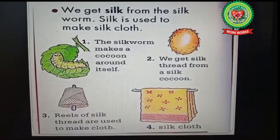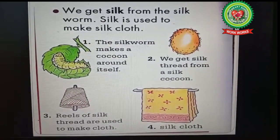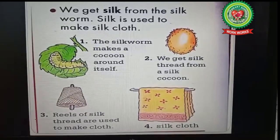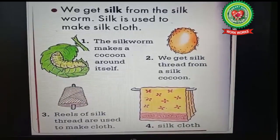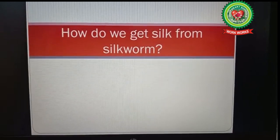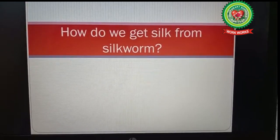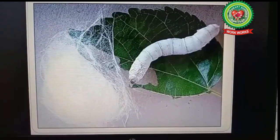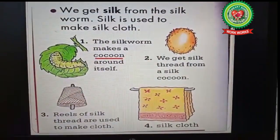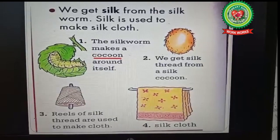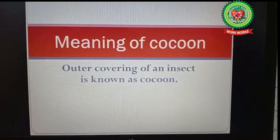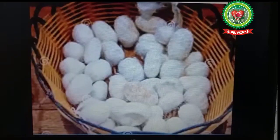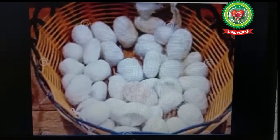Now we will read about the second natural fiber, that is silk. Silk is a natural protein fiber which we get from silkworm. The silkworm, which rests on mulberry leaves, makes a cocoon around itself. Underline the word 'cocoon' and write down its meaning: outer covering of an insect. Now let's have a look at how a cocoon looks.